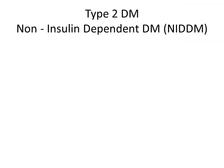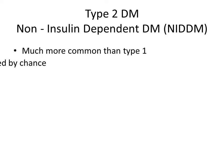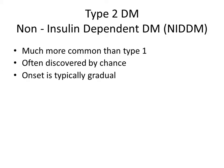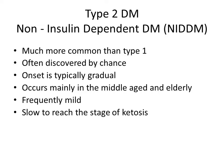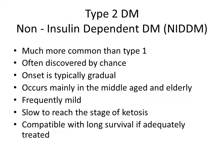Type 2 diabetes mellitus, also known as non-insulin dependent diabetes mellitus, is much more common than type 1 and is so slow in onset that it is often discovered by chance. Onset is typically gradual and occurs mainly in middle-aged and elderly individuals. It is frequently mild and slow to reach ketosis. If blood glucose is adequately maintained, it is compatible with long-term survival. Other diseases like hypertension and coronary heart disease frequently coexist.